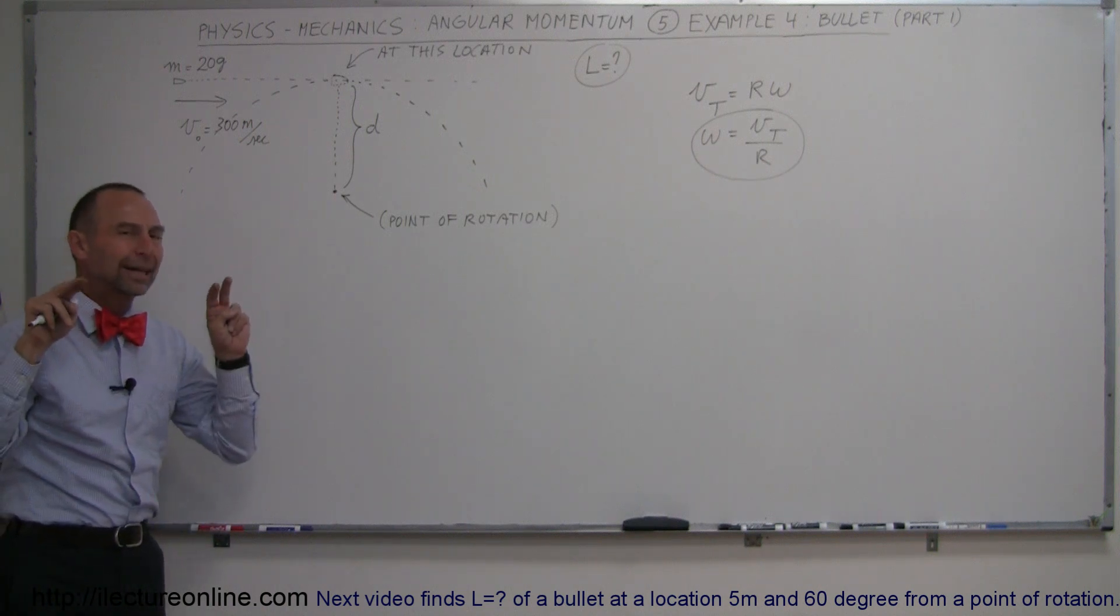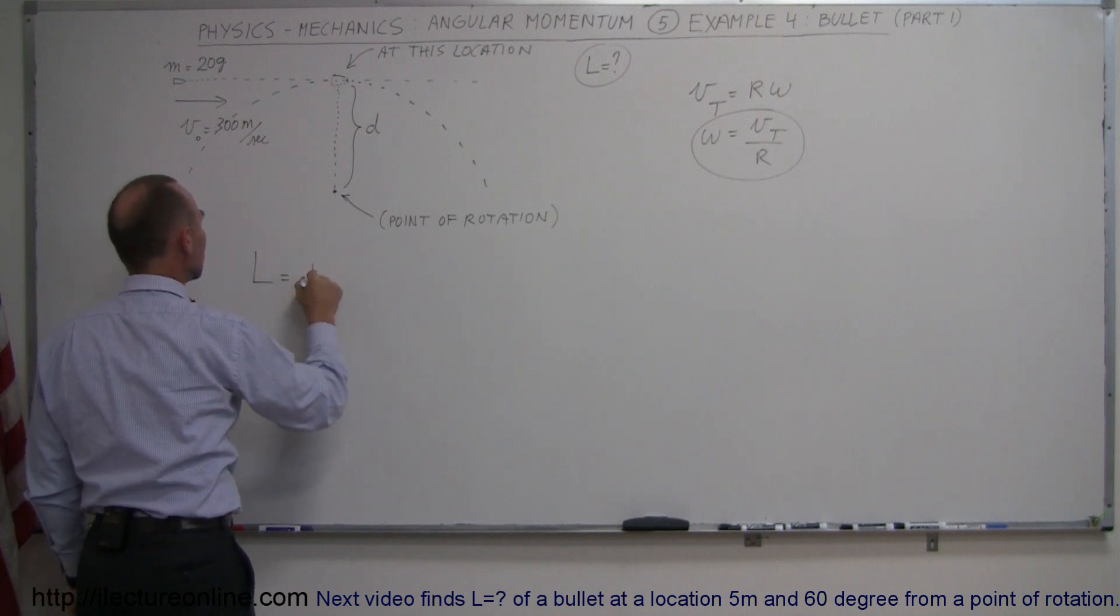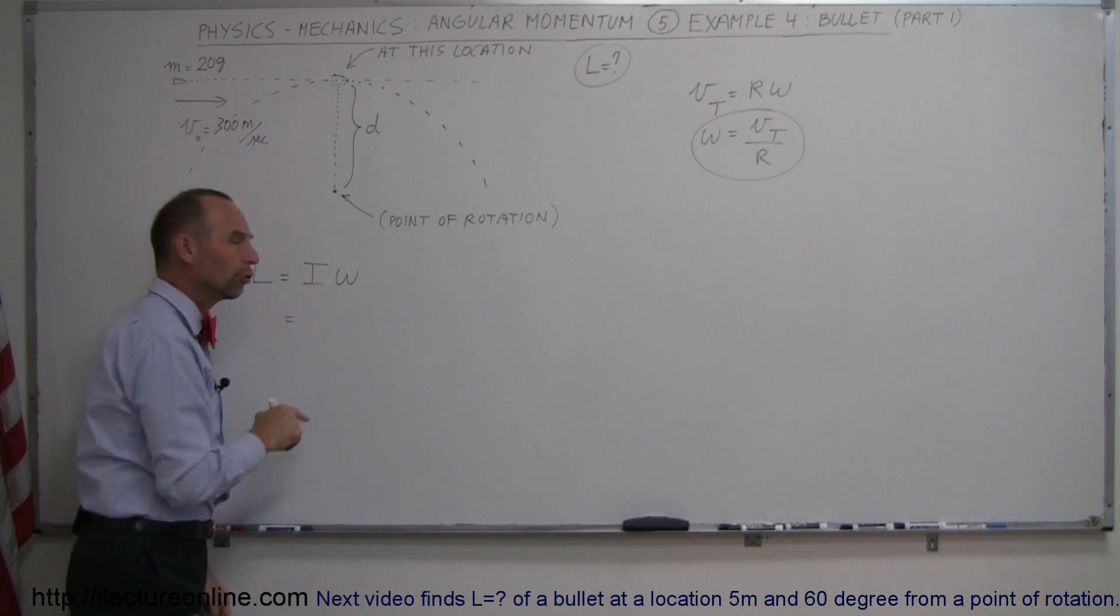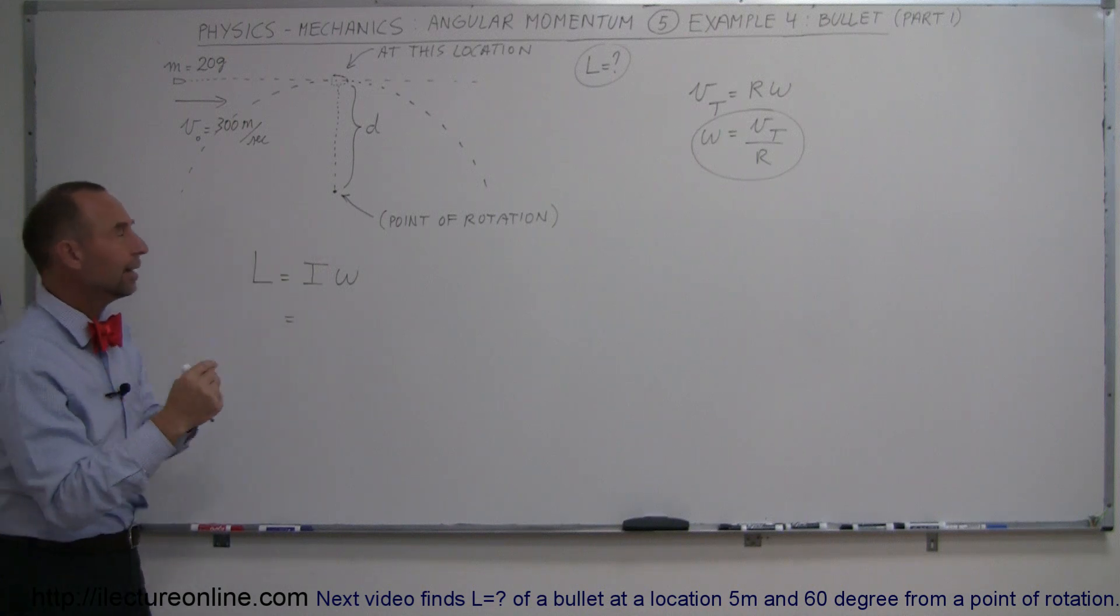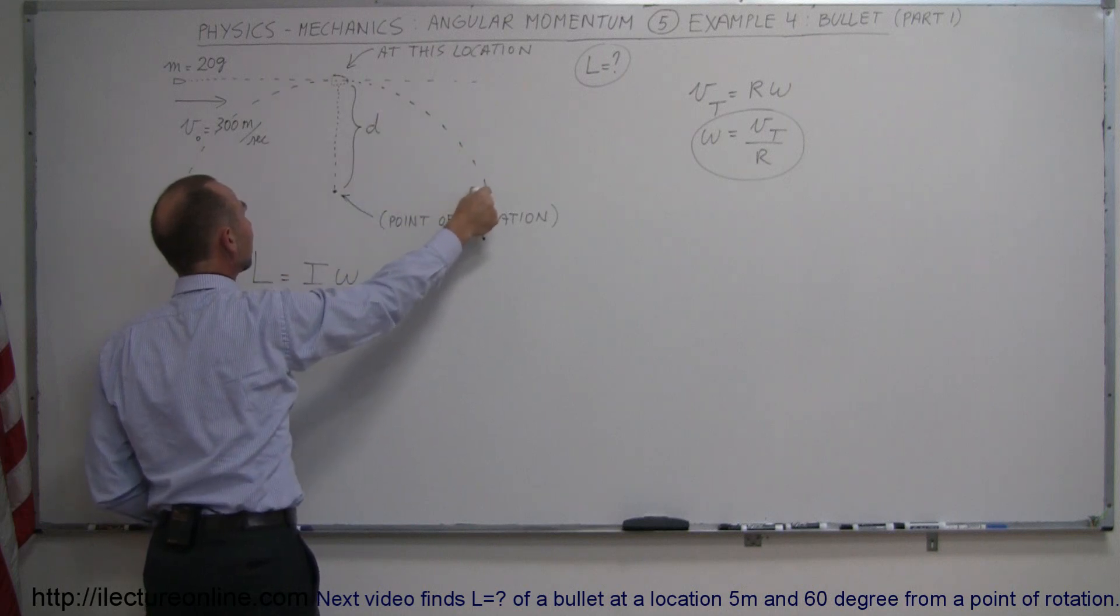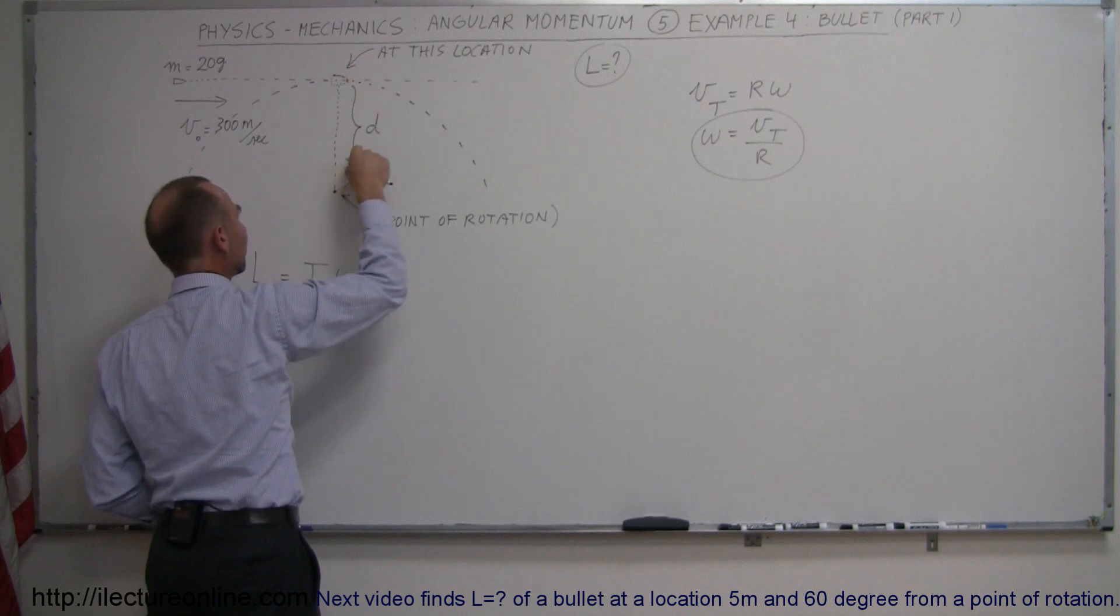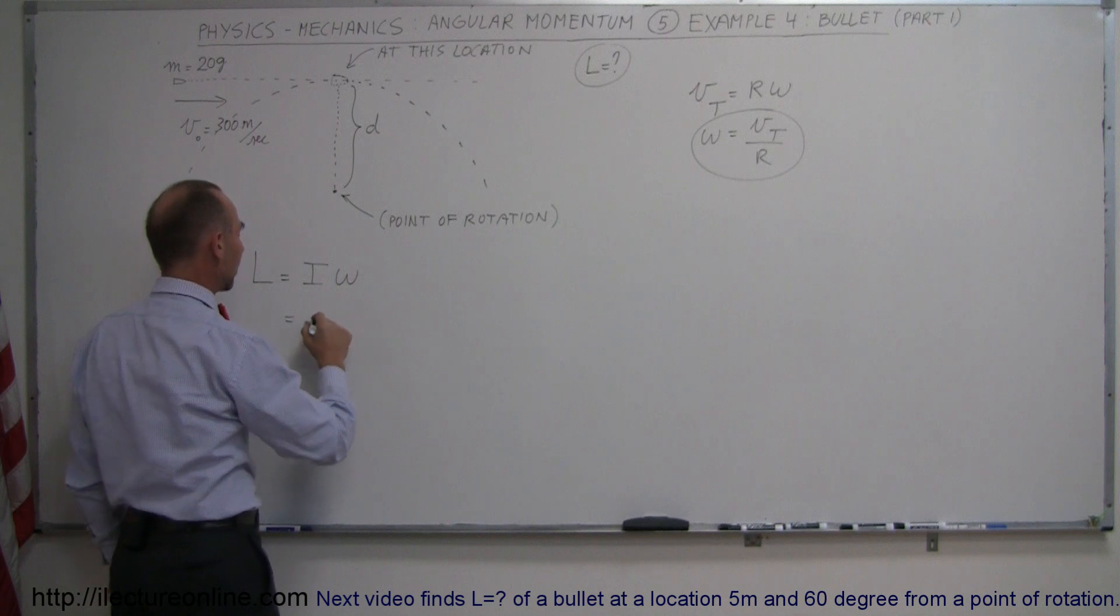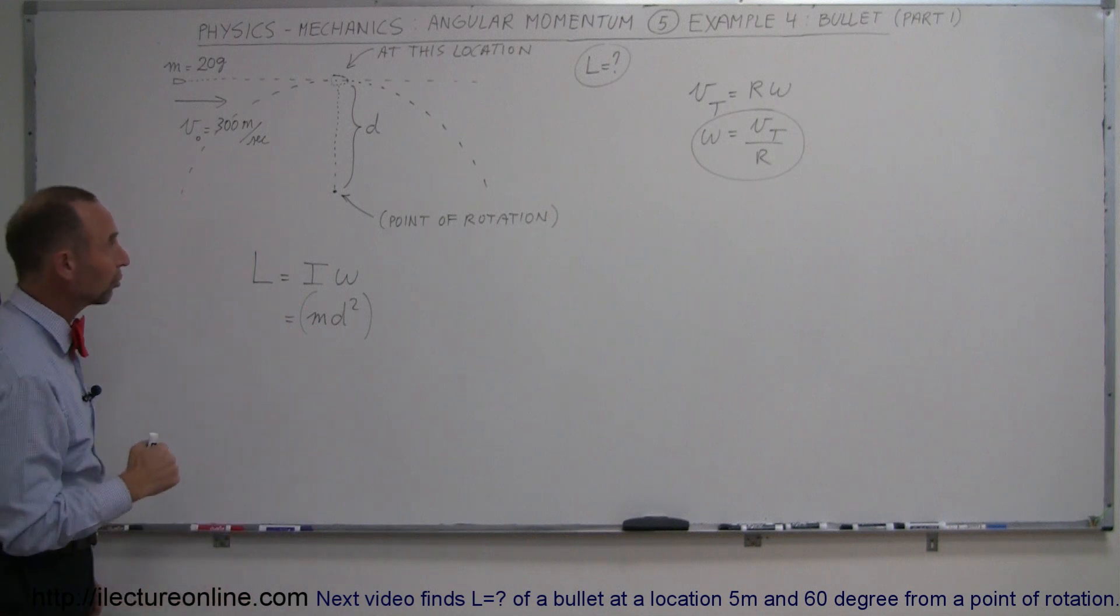So this would be what we would call the equivalent angular momentum. We can then say that the angular momentum is equal to the moment of inertia of the bullet times the angular velocity. Now what would be the moment of inertia of a bullet? Again, you can only have moment of inertia if you're going around in circles. But if you assume that the bullet could be traveling around in a circular path like this, you would then have a massed object at a distance R, or in this case D, away from the point of rotation. So therefore, we would have M times the radius squared or M times D squared. That would be the moment of inertia of the bullet if it were to go around in a circle.